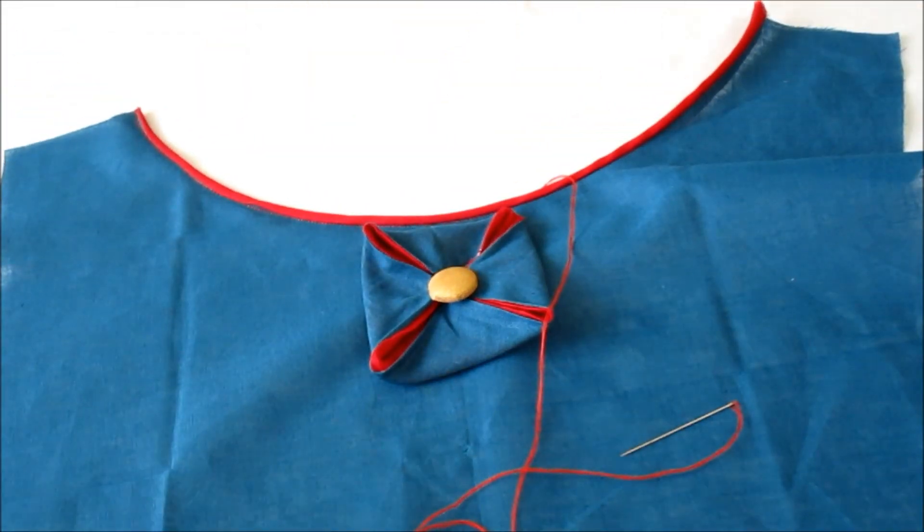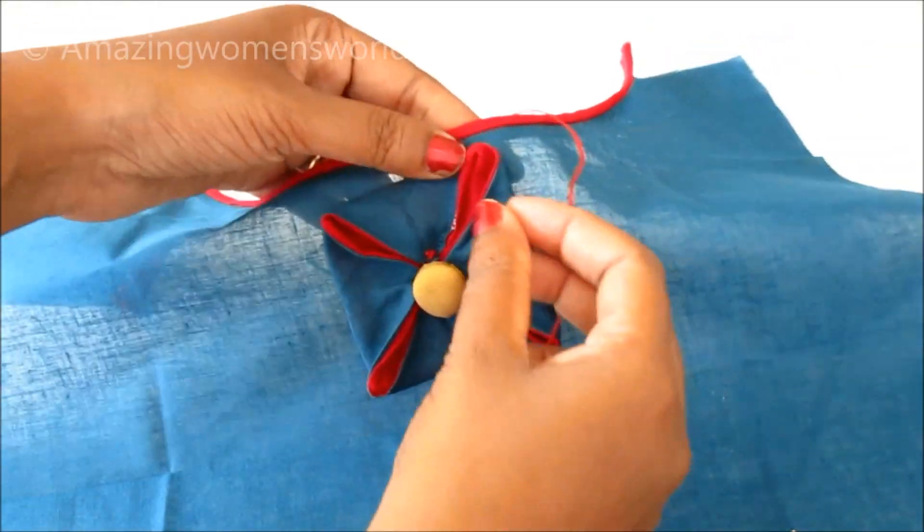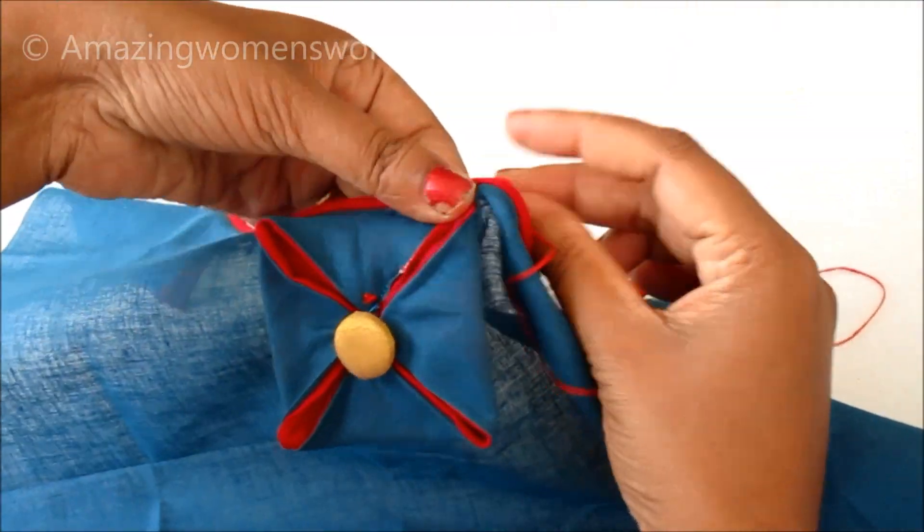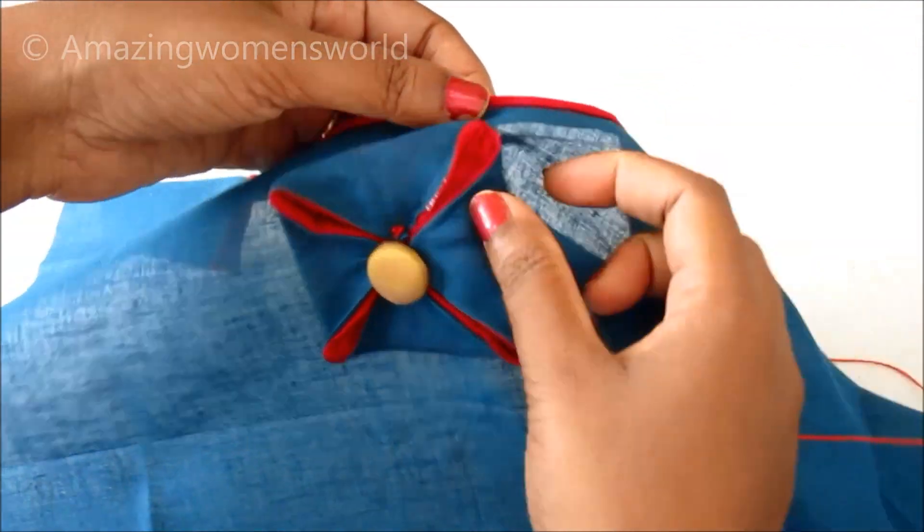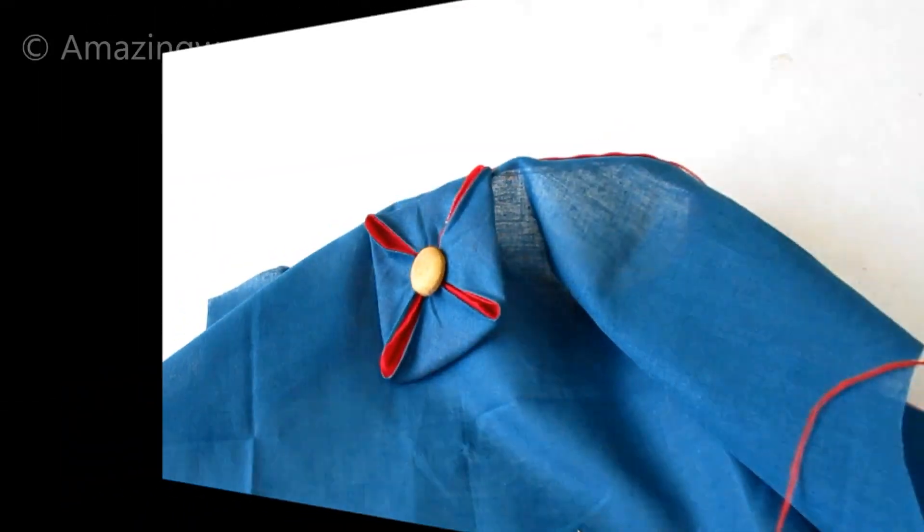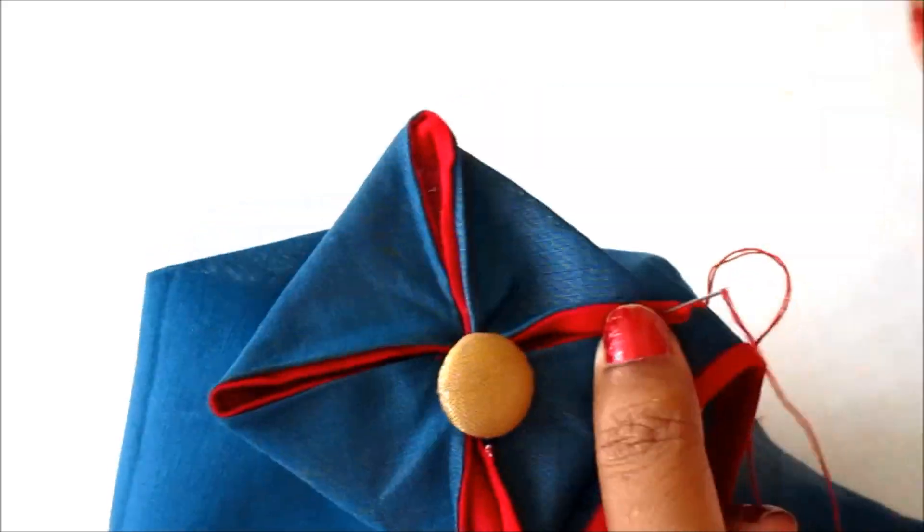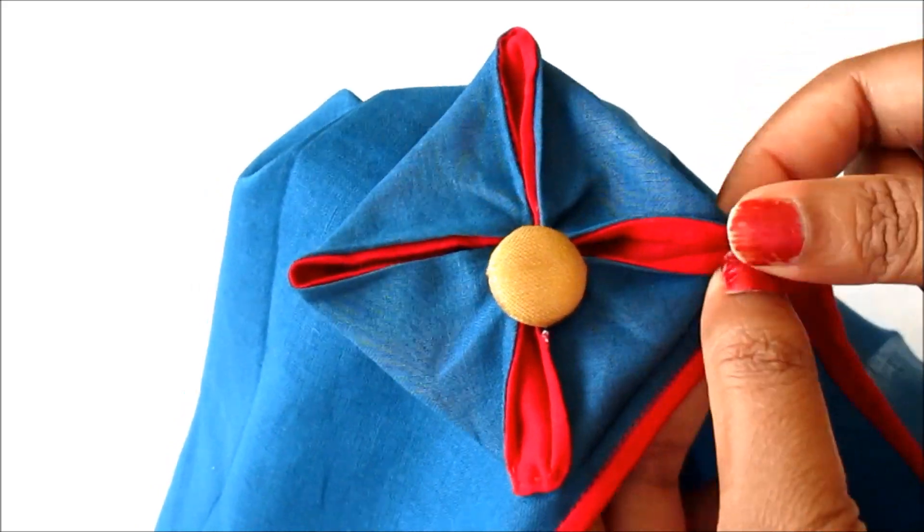Once joined, this is how it looks. Now we have to open the edges of this shape a little like this and we have to give the stitch at the corners to secure. Make very little openings like this and on that we have to secure with the stitches. I think you can clearly see it right now.